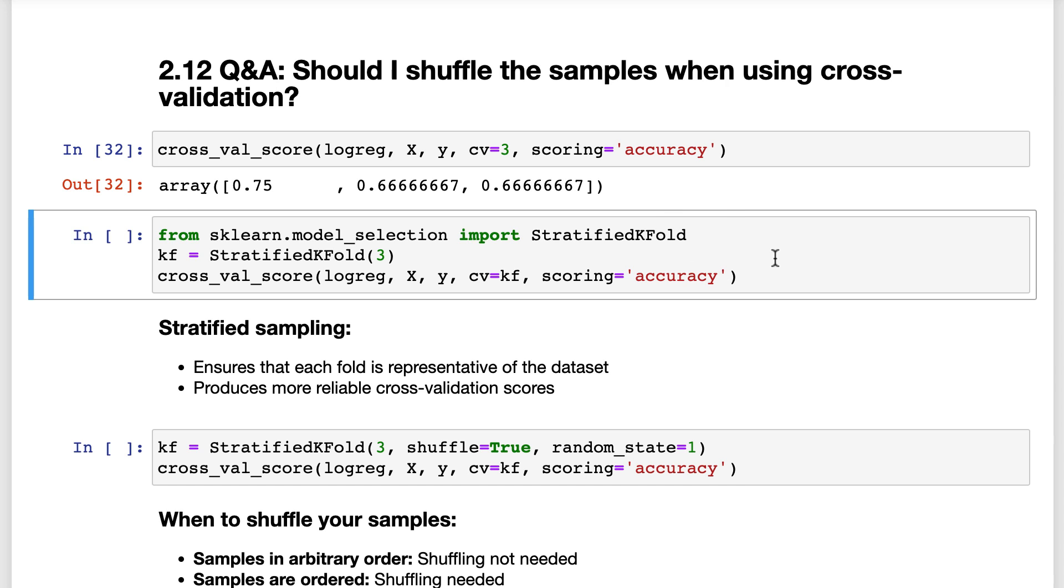This code shows you what happens under the hood when you specify CV equals 3 for a classification problem. I'm going to walk through this code so you understand what's happening and you can modify it when needed.